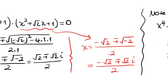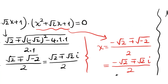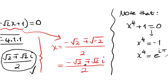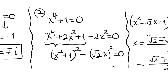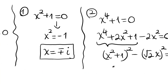So in total we have six roots: two from x squared plus 1 equals 0, giving plus and minus i, and four from the quartic. Thank you for watching and see you in the next video.